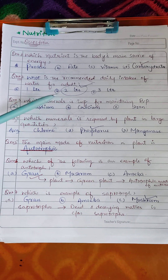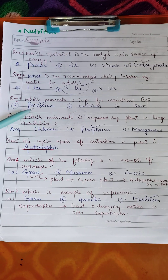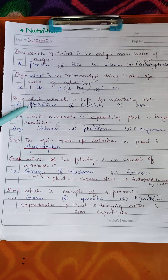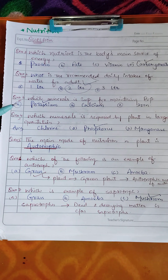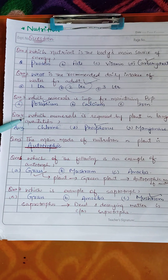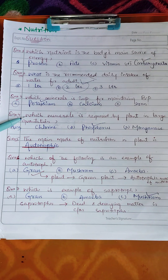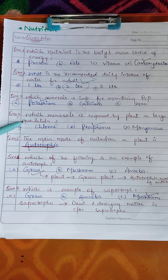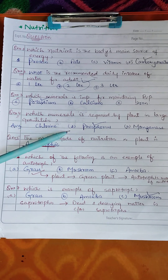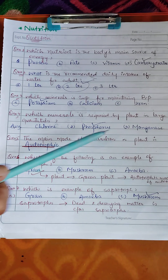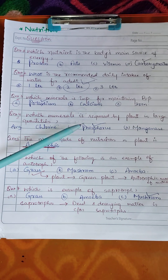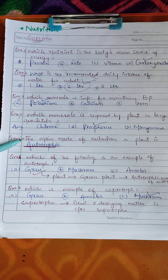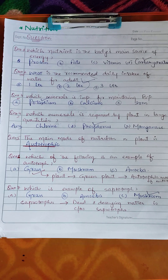Question three: which mineral is important for maintaining blood pressure? Options: potassium, calcium, iron. The answer is potassium. Question four: which mineral is required by plants in large quantity? Options: chlorine, phosphorus, manganese. The answer is phosphorus.